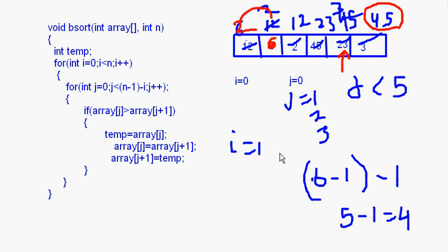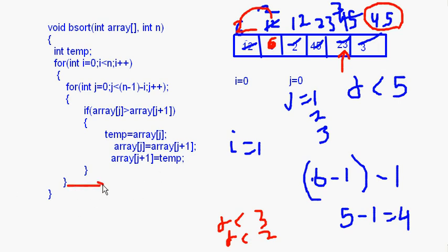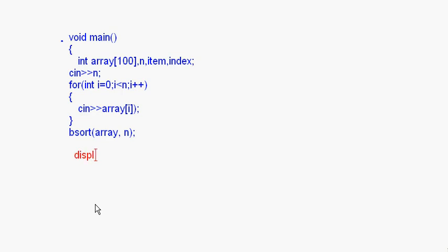Like this the loop will go on, and this inner loop keeps reducing — j less than 5, then j less than 4, then j less than 3, then j less than 2 — because the heaviest element comes at the end each time, so there is no need to check it again. After the outer for loop, you can display the array to see the changes that have been made, then go back to your main method and display the sorted array.